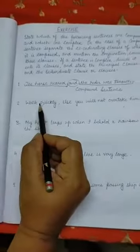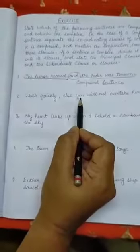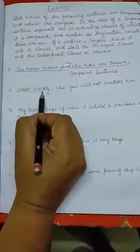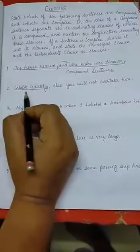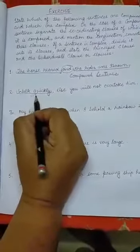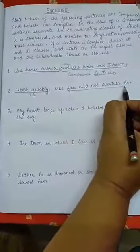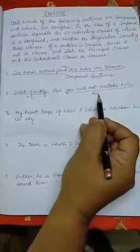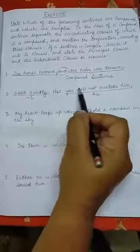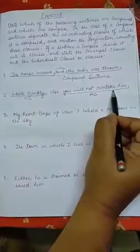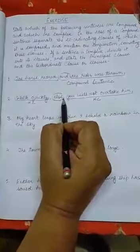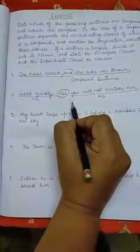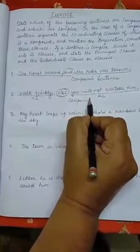The second sentence is: 'Walk quickly, else you will not overtake him.' 'Walk quickly' is your main clause and 'you will not overtake him' is also an independent clause, complete in its meaning. Both are principal clauses connected by the conjunction 'else,' so this is also a compound sentence.